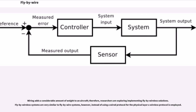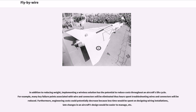Wiring adds considerable weight to an aircraft, so researchers are exploring fly-by-wireless solutions. Fly-by-wireless systems are very similar to fly-by-wire systems, but instead of a wired protocol for the physical layer, a wireless protocol is employed. In addition to reducing weight, a wireless solution has the potential to reduce costs throughout an aircraft's life cycle. Many key failure points associated with wires and connectors will be eliminated, hours spent troubleshooting will be reduced, engineering costs could decrease as less time would be spent on designing wiring installations, and late design changes would be easier to manage.